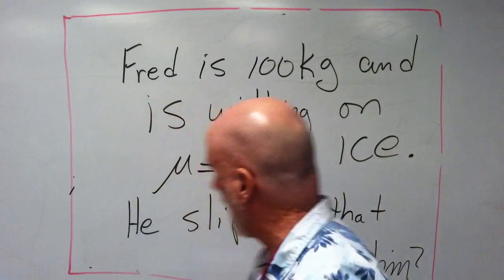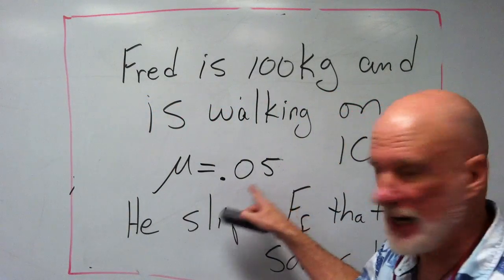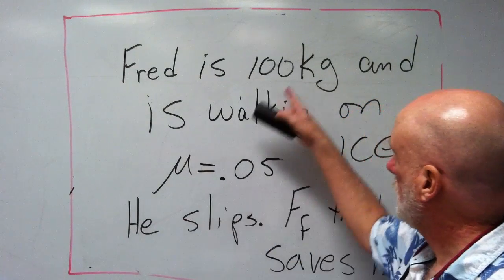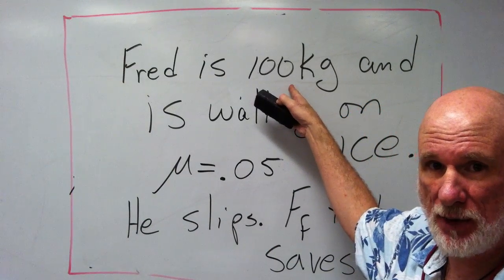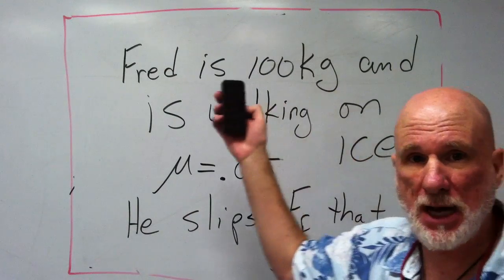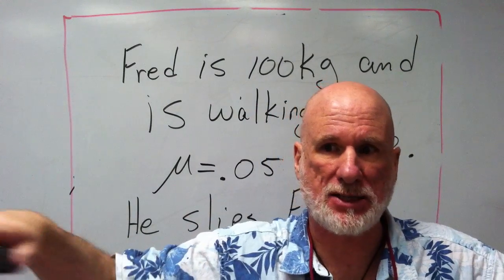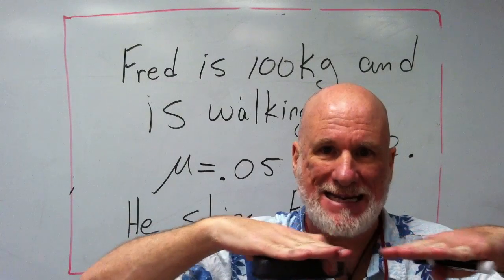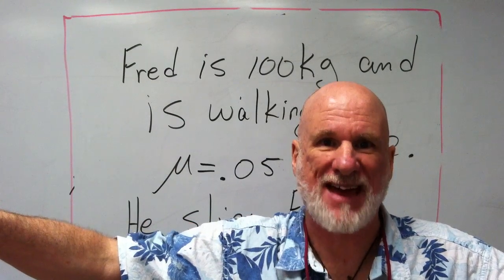All right, so what do we have that's important here? We have 0.05 as the mu. He's 100 kilograms. So what do we need to know? It's a horizontal plane, so his weight is going to be 1000 newtons.